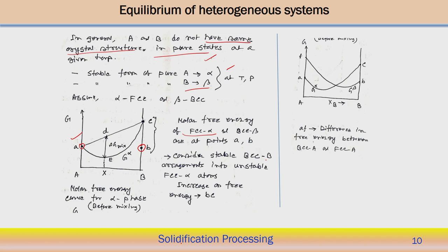Assuming that stable BCC B atoms are rearranged into an unstable FCC alpha structure — in that case there is an increase in free energy. The increment from B to C is the increment of the Gibbs free energy for the FCC alpha arrangement. The curve G_alpha represents the alpha phase structure, and G_beta represents the beta phase, with composition varying from A to B. The distance AF is the difference in free energy between BCC A and FCC A — two different phases at composition A.